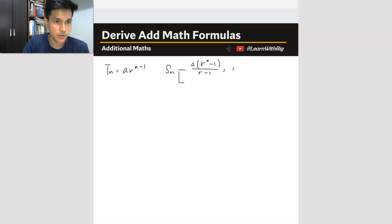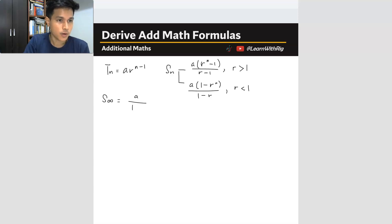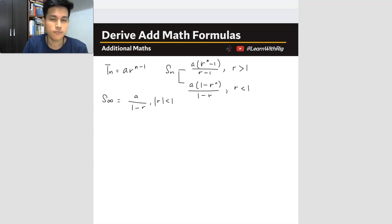You use this first Sn formula when R is more than 1. The second Sn formula is A times 1 minus R to the power of n, over 1 minus R, and this one is when R is less than 1. The last one is the sum of infinity, which is A over 1 minus R, and the condition is that the modulus of R must be less than 1.